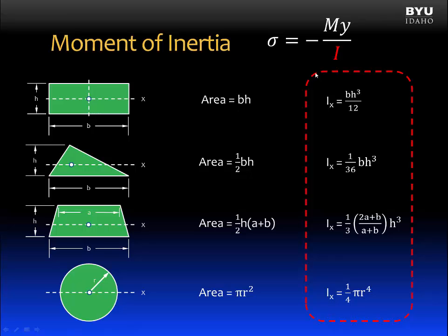So what does moment of inertia do in the flexure formula? When the moment of inertia increases for a given moment and value for y, the stress decreases. This is logical because if we want to decrease the stress in a beam, we can increase the cross-section by using a larger beam that will have a bigger value for moment of inertia, and therefore we will get smaller stress. Physically, the moment of inertia calculates how much material in the cross-section is present at a distance away from the neutral axis. As h increases, our moment of inertia also increases rapidly since h is cubed, and the more material there is at a distance from the neutral axis where it can resist the internal moment.